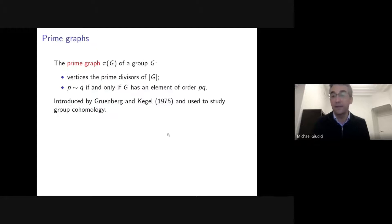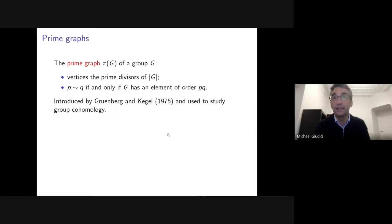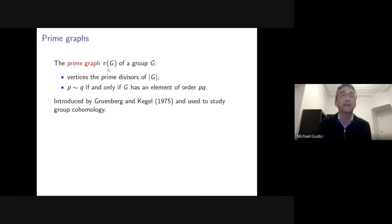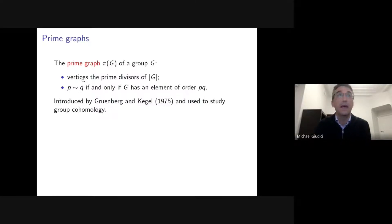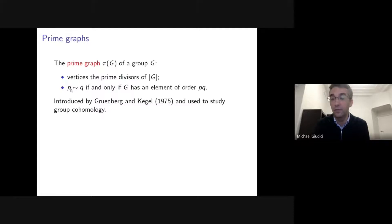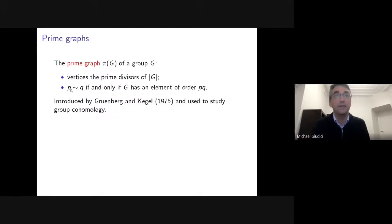A related concept is the prime graph, introduced by Grünberg and Kegel in 1975, originally used to study group cohomology. The vertices of the prime graph are the prime divisors of the order of your group, and two primes p and q are joined by an edge precisely when the group has an element of order p times q.